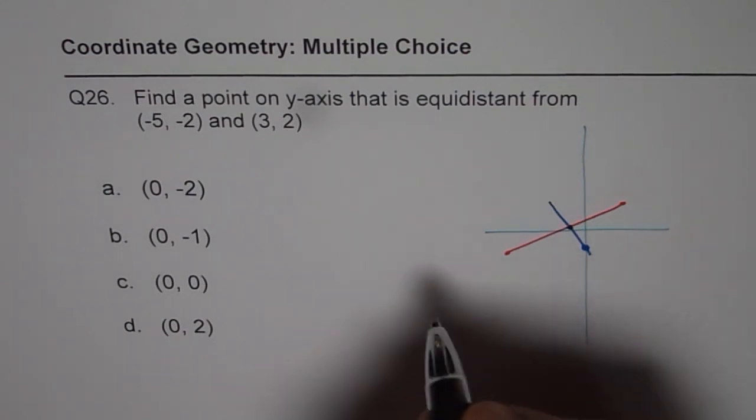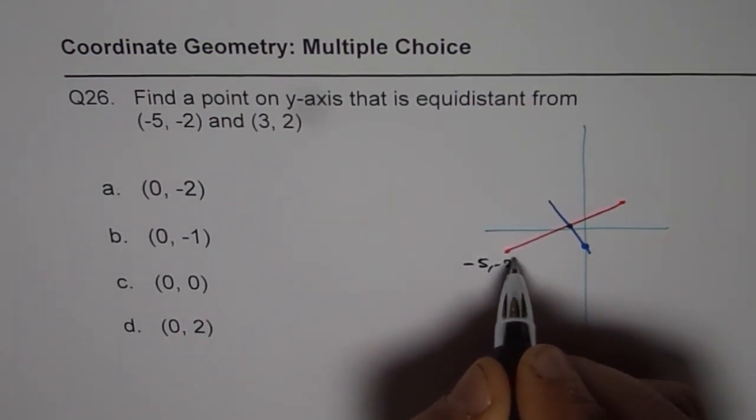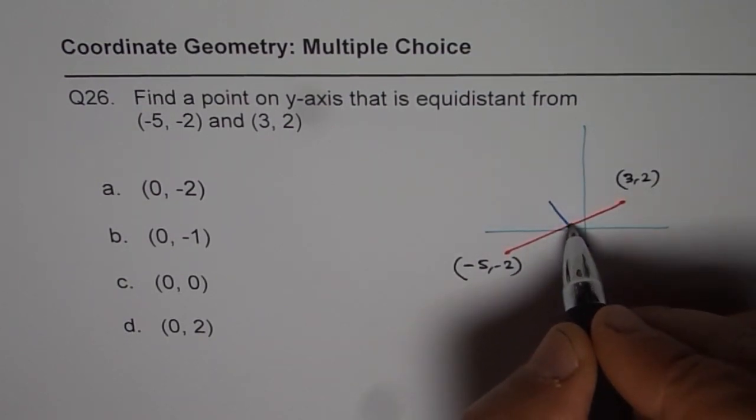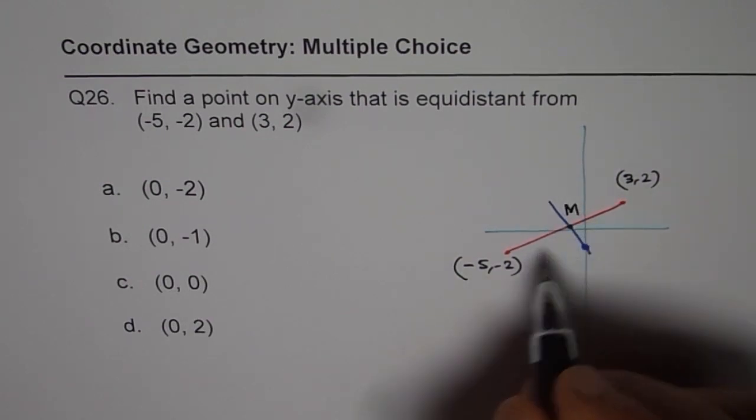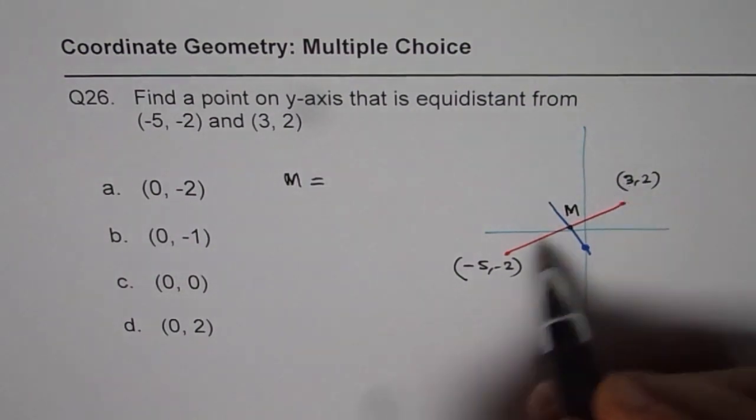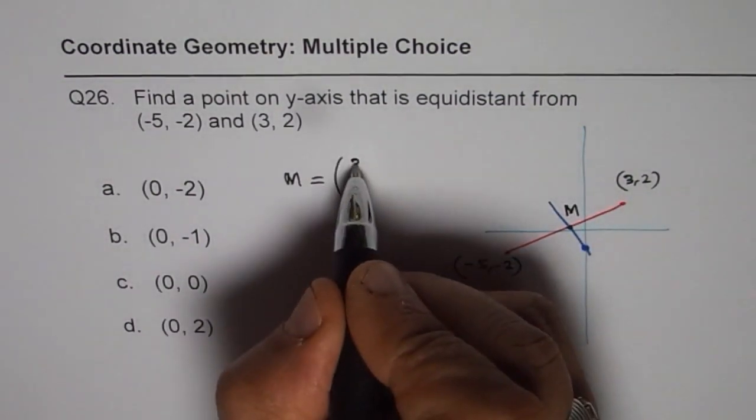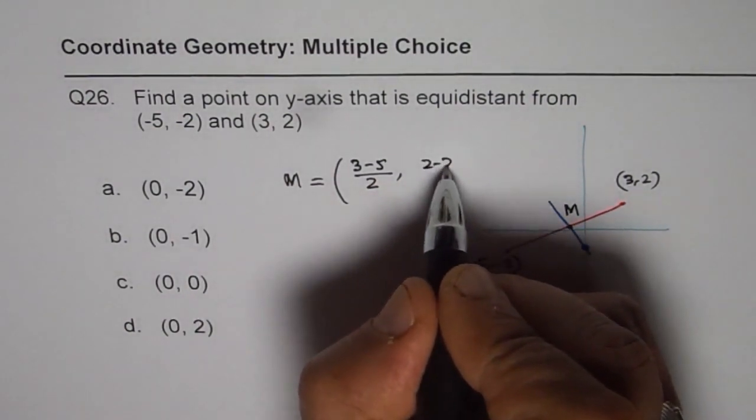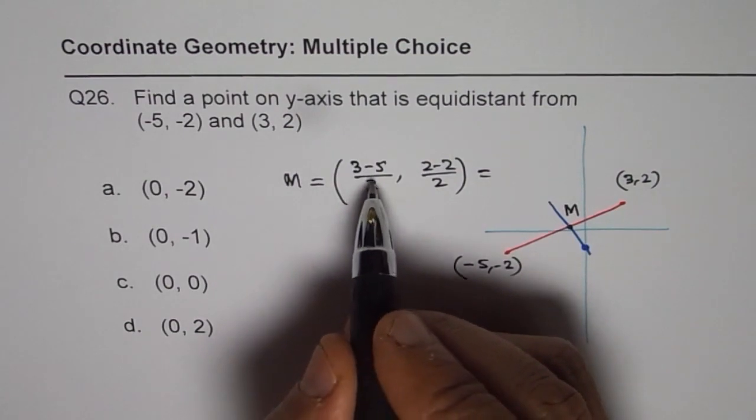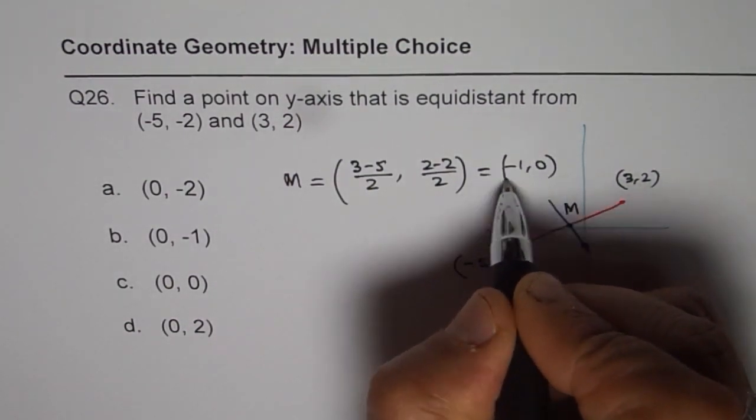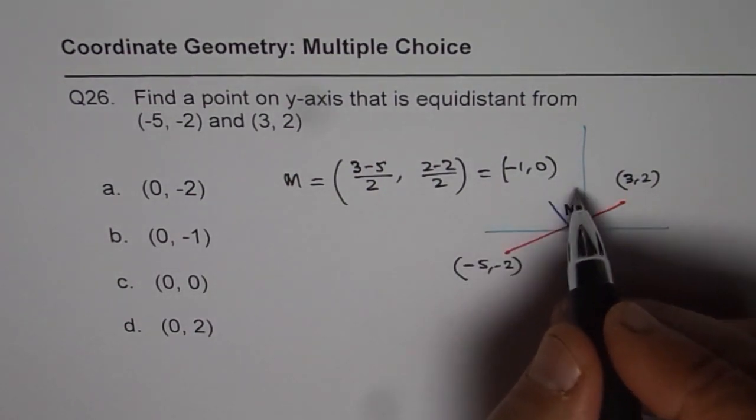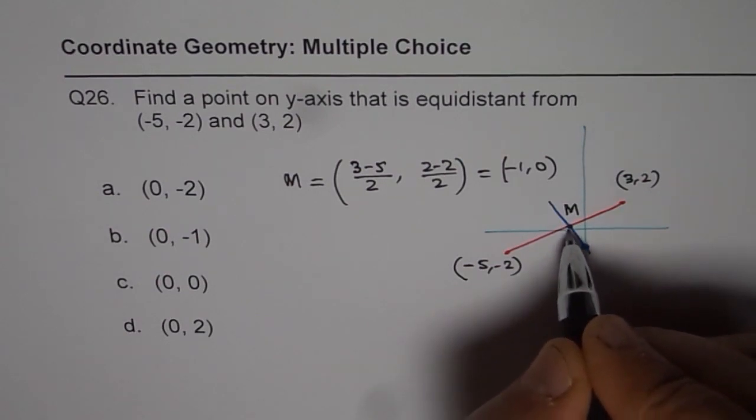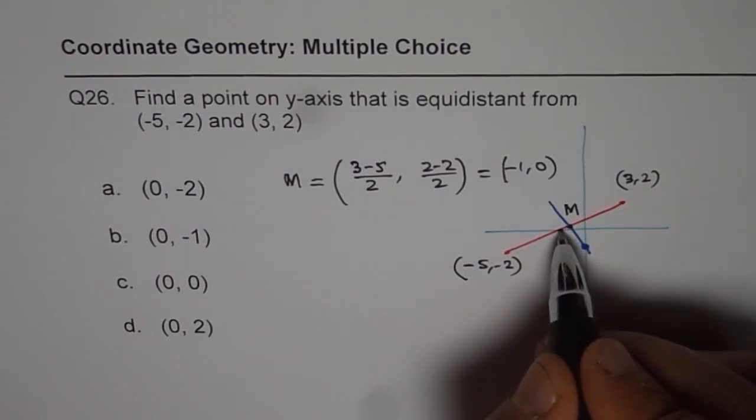So that is the strategy. We are given these two points, (-5, -2) and (3, 2). From these two points, we can find the midpoint m. Midpoint will be the average of x values, which is (3 - 5)/2, and (2 - 2)/2. So that midpoint is indeed (-1, 0). So basically it was on the x-intercept. So my drawing is not that accurate, but this point is the midpoint.